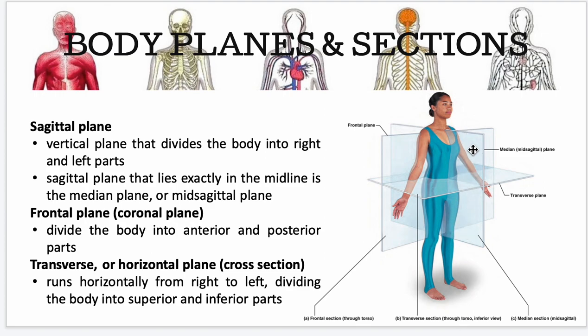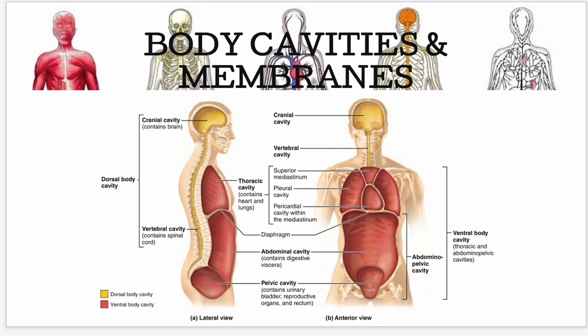To summarize the planes: the sagittal plane divides the body into right and left; the transverse plane divides the body into superior and inferior; and the frontal plane divides the body into anterior and posterior. Next is body cavities and membranes.